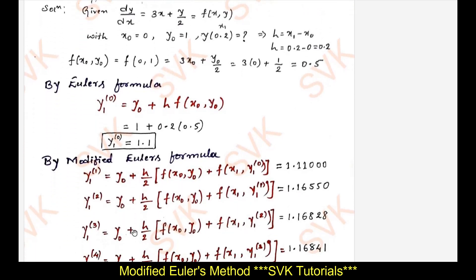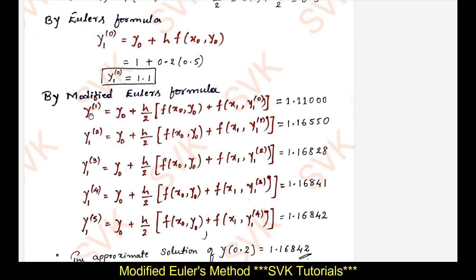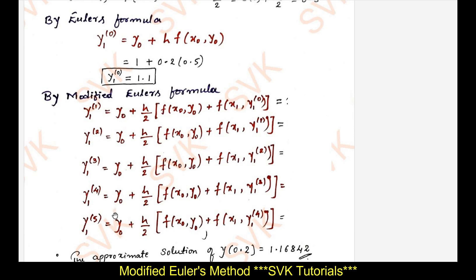Now moving on to the modified Euler's formula. y₁⁽¹⁾ equals y₀ plus (h/2) times [f(x₀, y₀) plus f(x₁, y₁⁽⁰⁾)]. Substitute y₁⁽⁰⁾ equal to 1.1 into this expression and continue the iterative procedure until reaching the approximate solution. The approximate solution is y(0.2) equal to 1.16842.